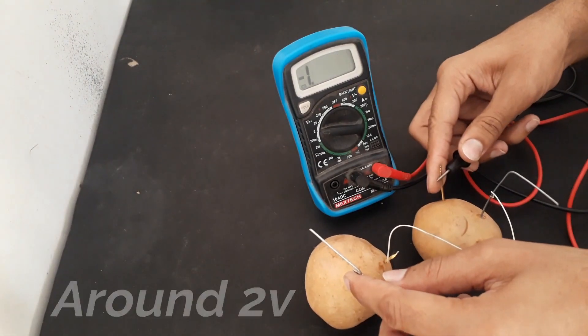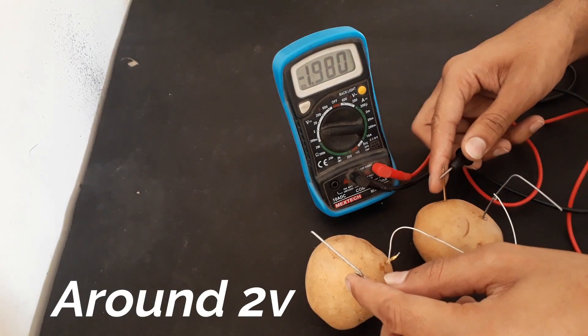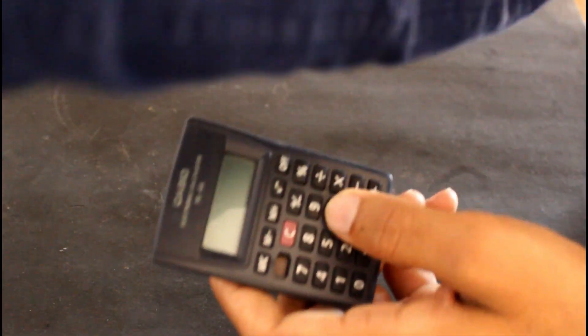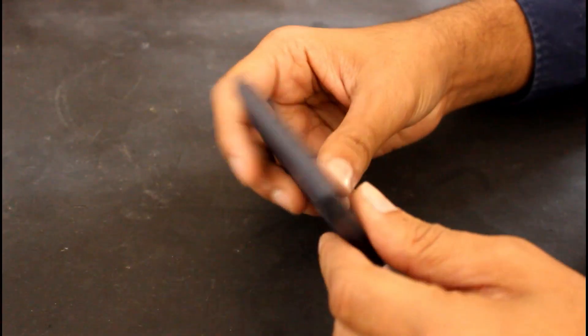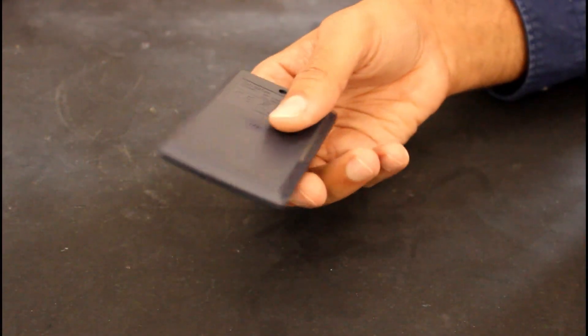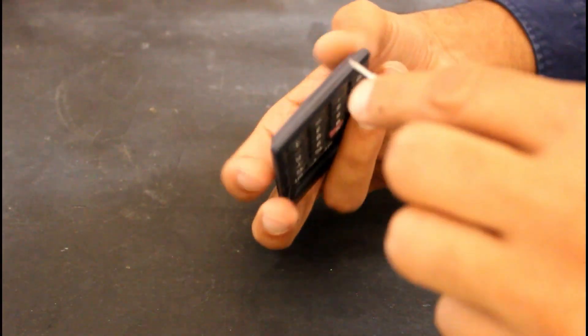So almost two volts, which is enough to run a calculator. Well, now we will disassemble this calculator, remove the shell, and put a wire.